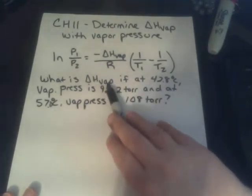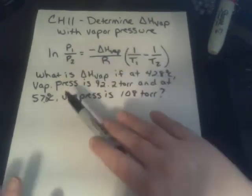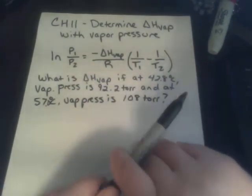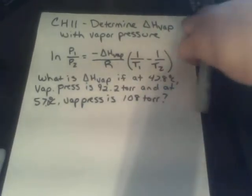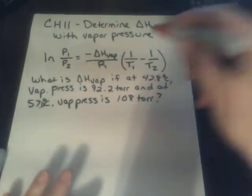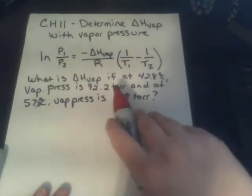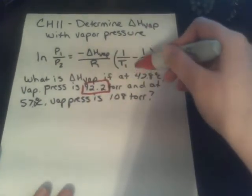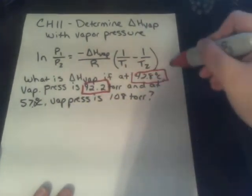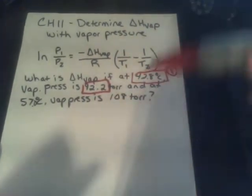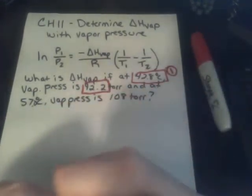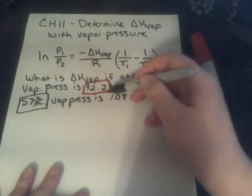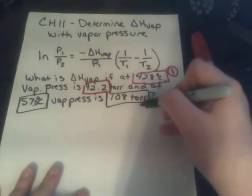So what is the enthalpy of vaporization? All we have to do, this one's actually called a plug and chug. So one good thing to do is just assign a pair of temperature and pressures as situation number one. So why don't we call the 92 torr and the 42.8, we'll call that situation one.